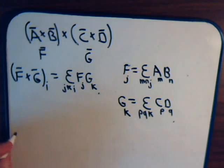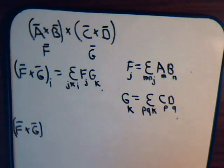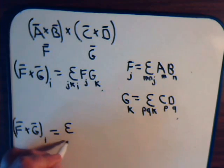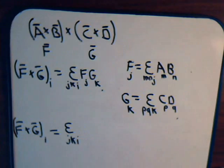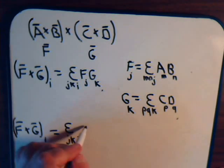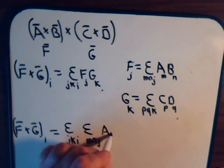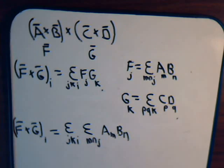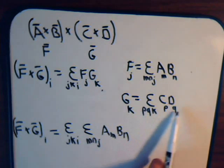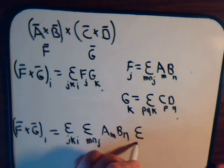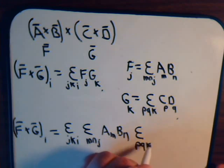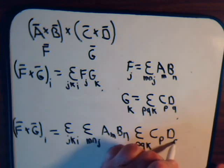Okay, now we have f cross g. Its i-th component equals epsilon j k i times f of j. But f of j is this. So epsilon m, n, j, a sub m, b sub n times g of k, but g of k is this, epsilon p, q, k, c of p, d q.